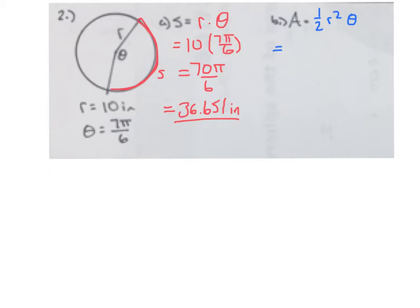So we just once again plug things in, 1 half, our r is 10 inches again, squared, times theta, 7 pi over 6. That will give us 700 pi over 6 times 2, or 12.